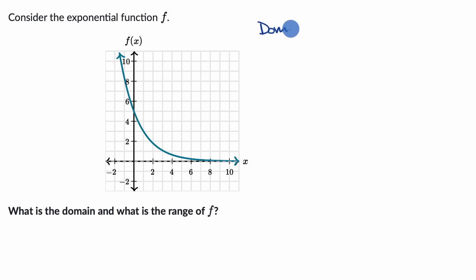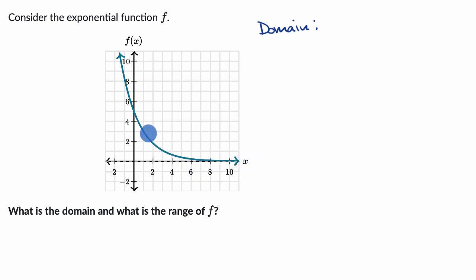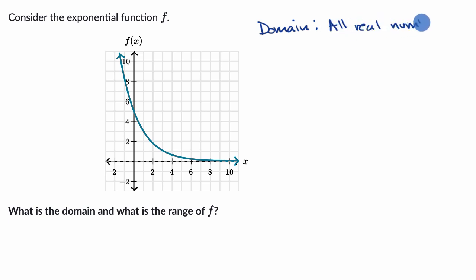Let's remind ourselves what domain and range mean. The domain is all of the x values that we could input into our function where our function is defined. If we look over here, it looks like we can take any real number x — any positive value, it looks like it's defined. This graph keeps going on and on to the right, and also to the left, taking on negative values. We could even say x equals zero. I don't see any gaps here where our function is not defined. So our domain looks like all real numbers — x can take on any real number, and f of x is going to be defined.